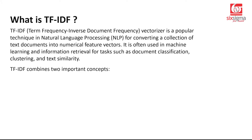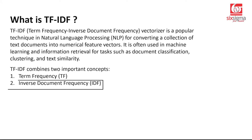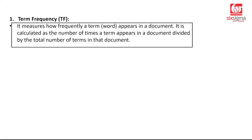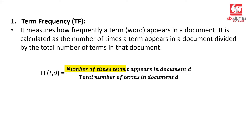TF-IDF has two components. TF, which is term frequency, measures how frequently a term or word appears in a document. It is calculated as the number of times a term appears in a document divided by the total number of terms in that document — so the number of times term T appears in document D divided by the total number of terms in the document. Term frequency is calculated at each document's level — that's an important point to consider.